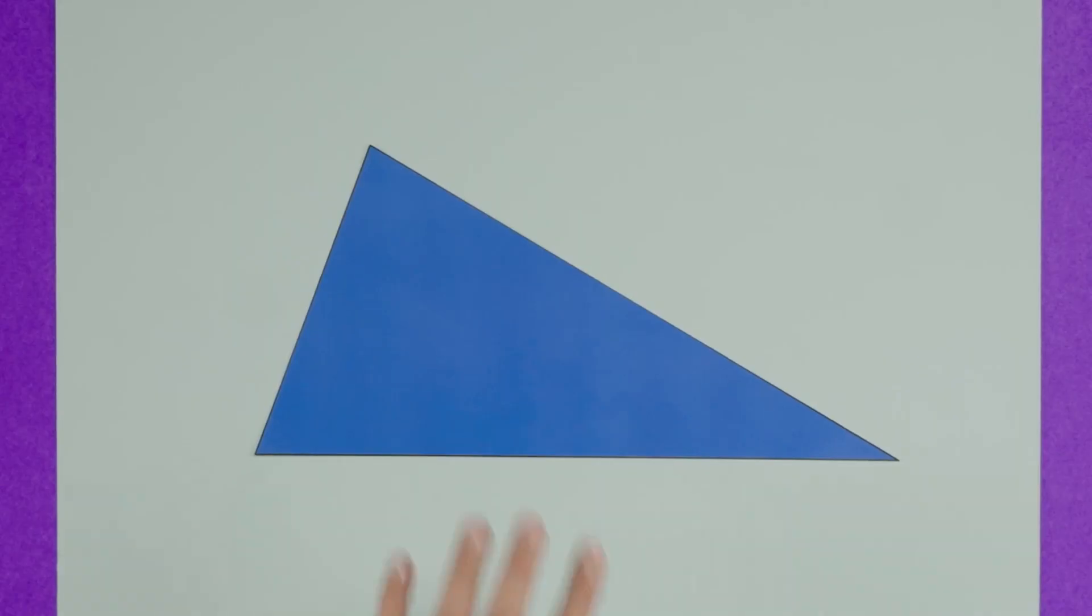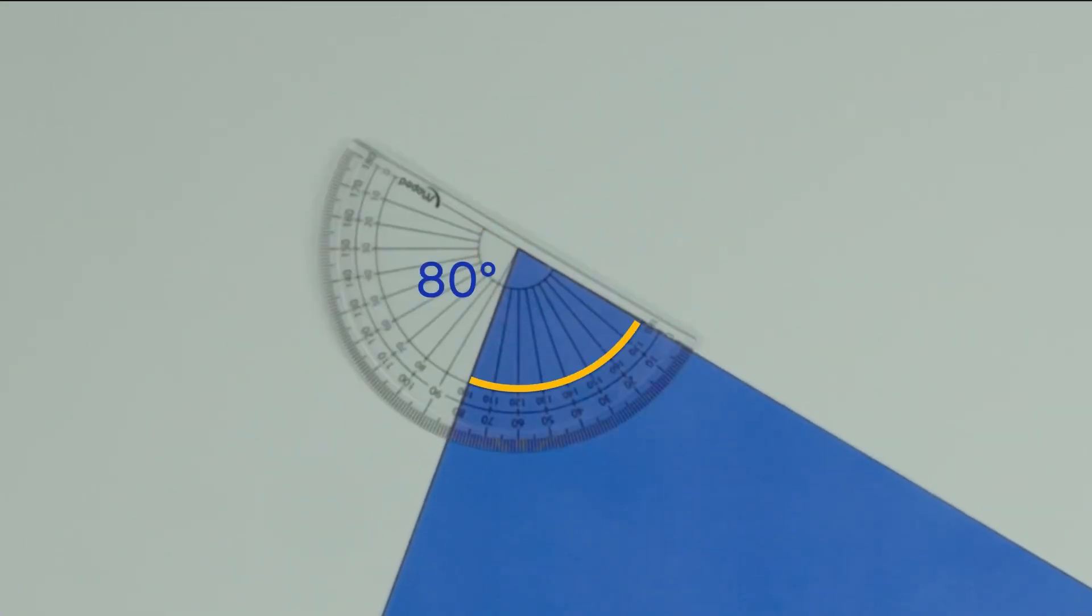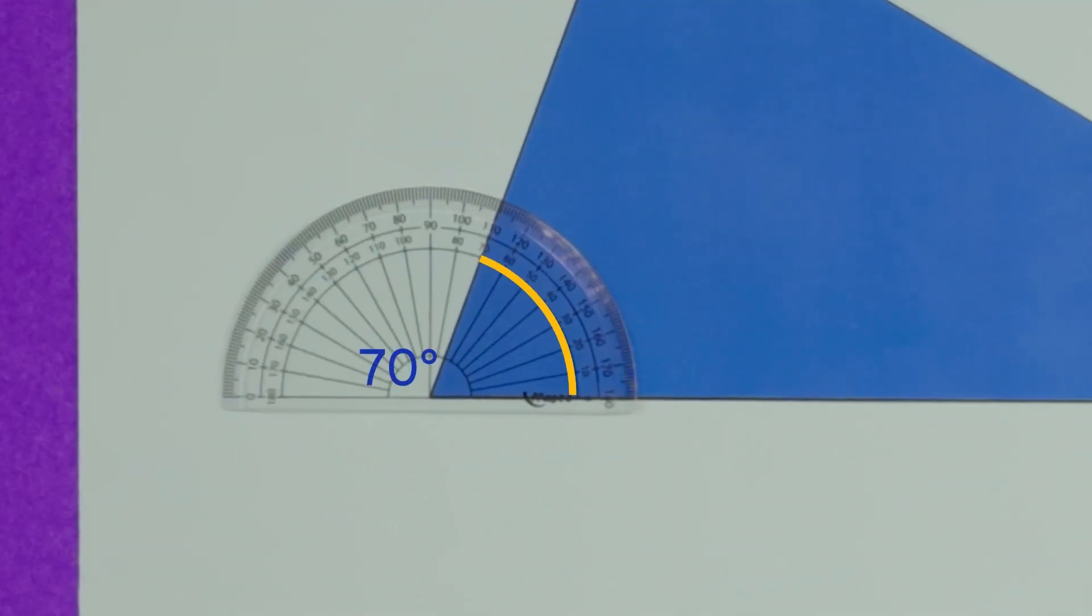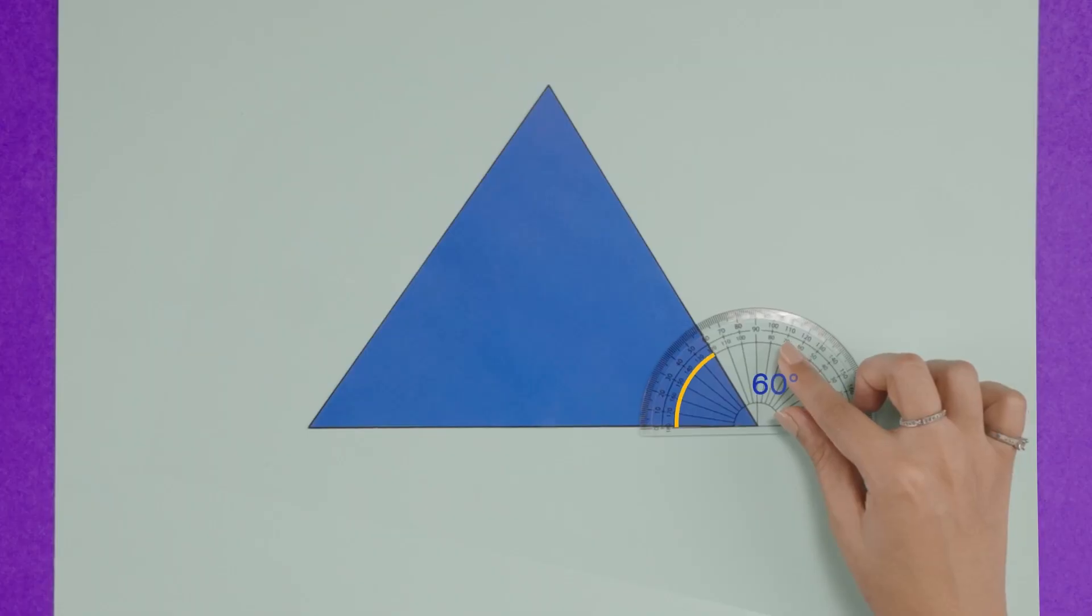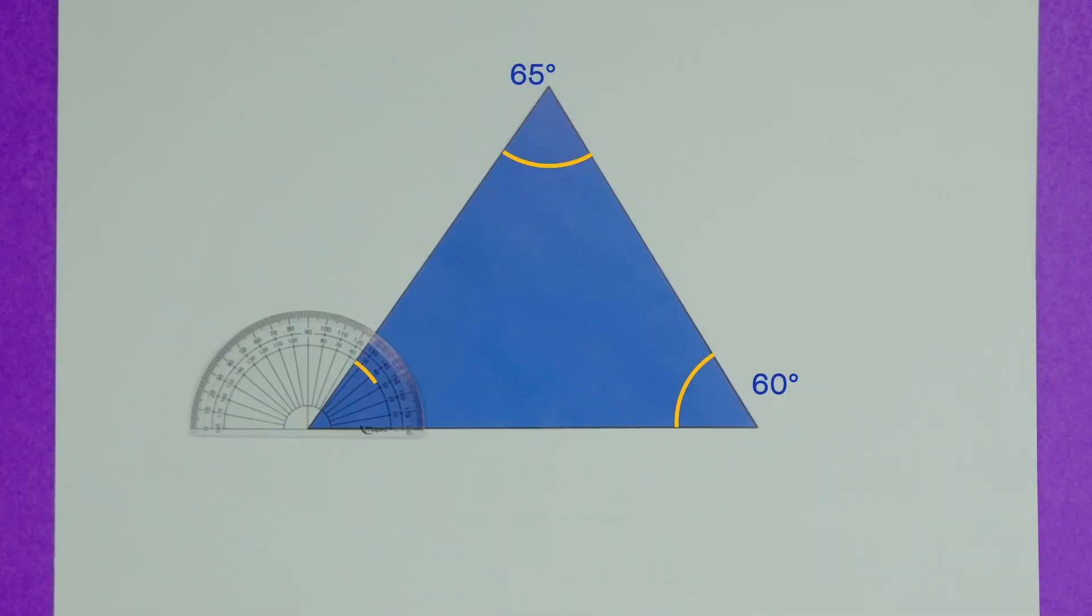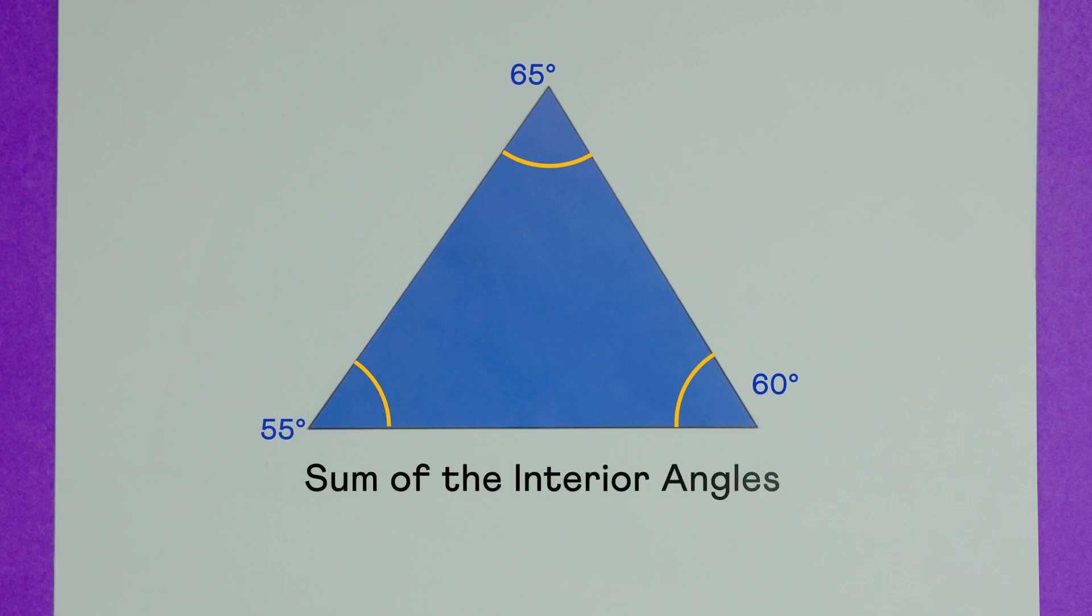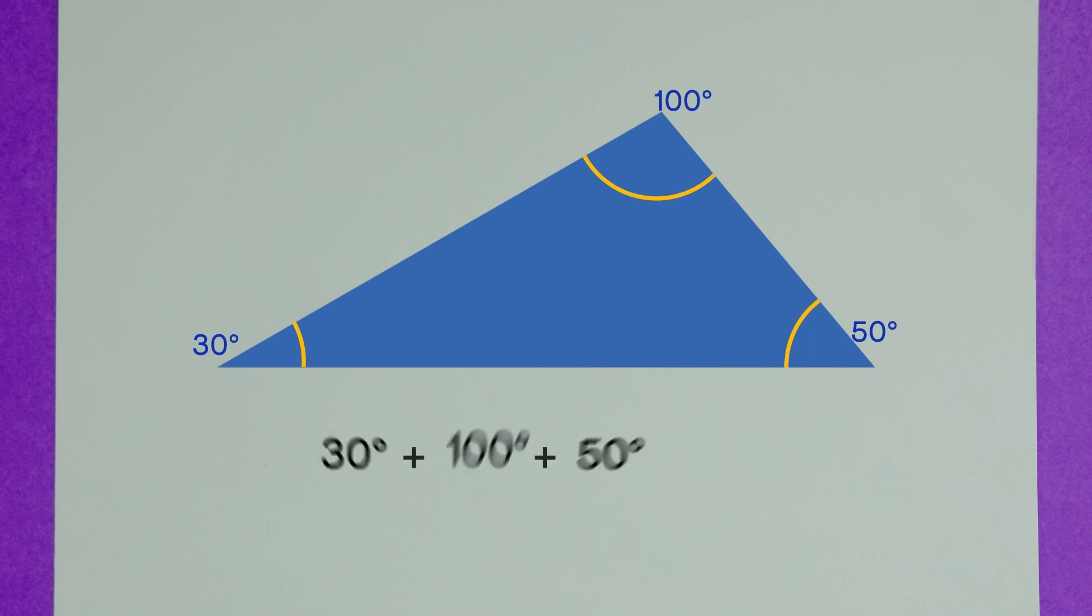What's the sum of interior angles of any polygon? Let's start with a triangle. Its interior angles measure 30 degrees, 80 degrees, and 70 degrees, and they add up to 180 degrees. Let's take another triangle. Once again, the sum of its interior angles equals 180 degrees. One more: 180 degrees again.